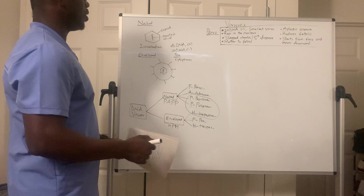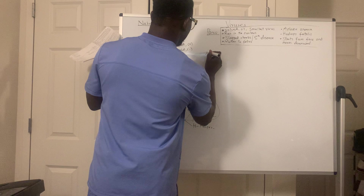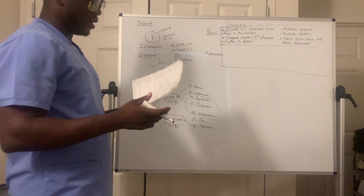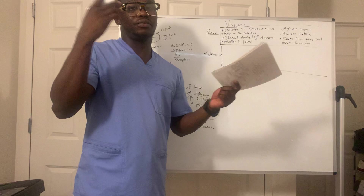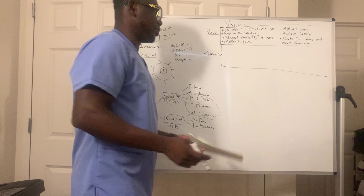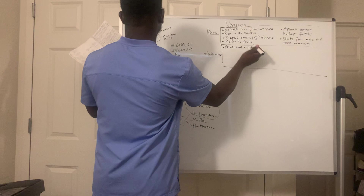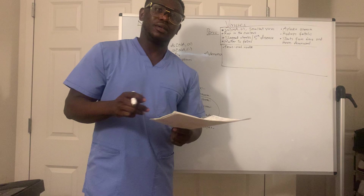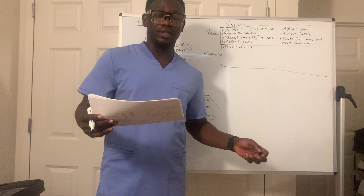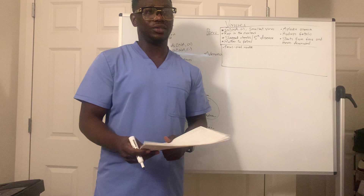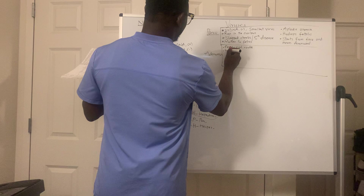The next virus is Adenovirus. The first thing to think about for Adenovirus is fecal-oral route transmission. It usually occurs in crowded places, and children are mostly at risk because they tend to go to daycare and be in crowded environments. Military recruits are also commonly affected since they are assembled in one crowded environment.